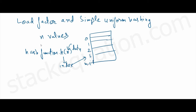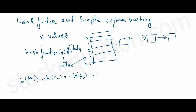Now if the hash function returns the same index for multiple values, that results in a collision, which ultimately leads to the formation of a linked list at that index. For example, if the hash function returns index i=1 for values k1, k2, and k3, then a linked list of k1, k2, and k3 will be formed at index 1.